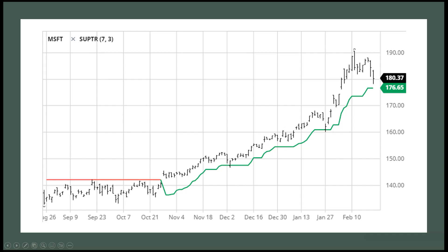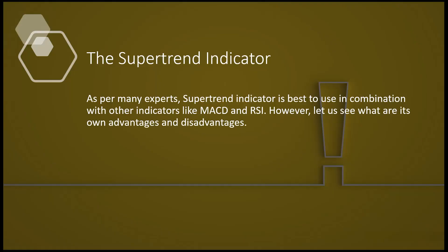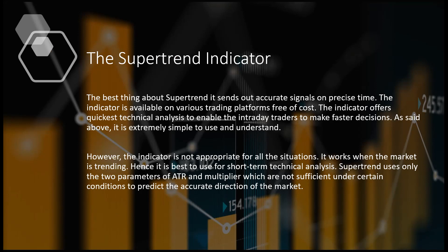On the whole, this is what a Supertrend Indicator looks like — it almost looks like a moving average. When price falls below, it's in red; when price is above, it's in green. But this is just the beginning. As with many indicators, the Supertrend Indicator is best used in combination with other indicators like MACD and RSI. Let us see what its own advantages and disadvantages are, and then we'll talk about combining it with MACD and RSI, building them all together into one great strategy.